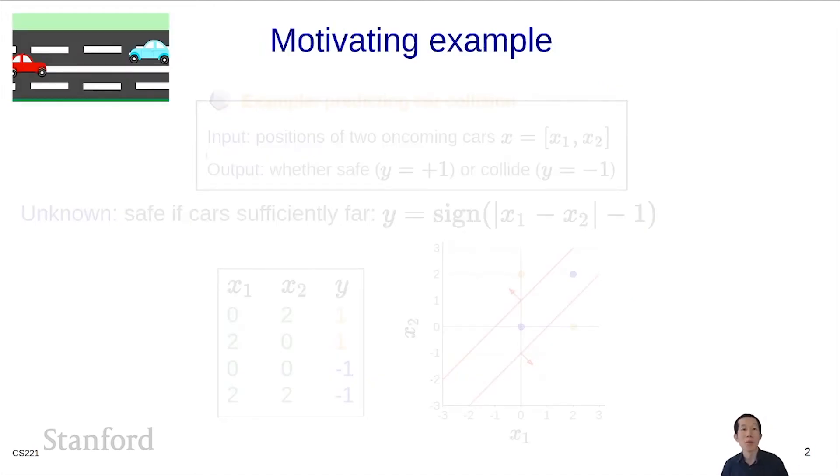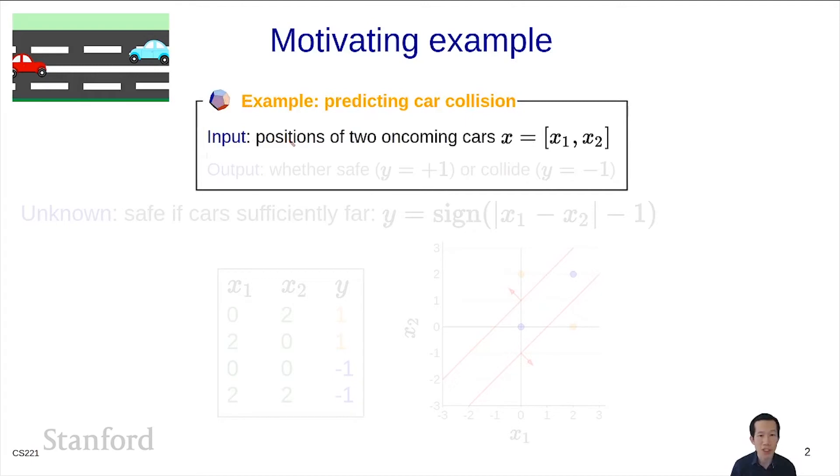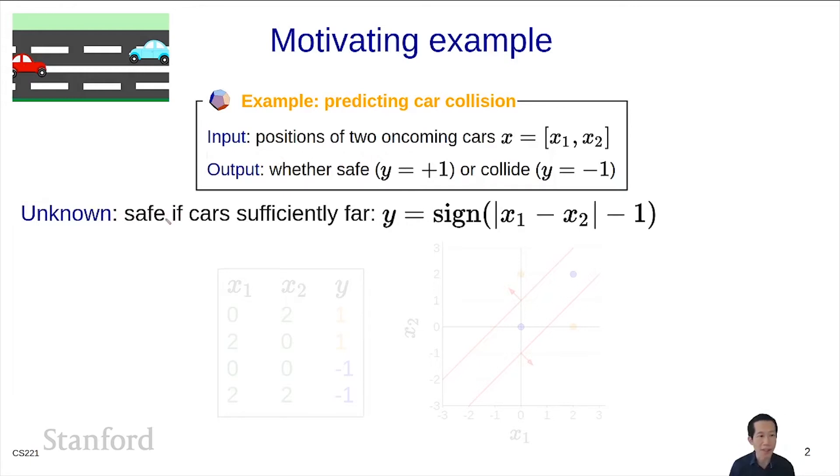Let me begin with a motivating example. Suppose you're trying to predict whether two cars are going to collide. The input is the positions of two cars, x₁ and x₂. You'd like to output whether y equals 1 if it's safe, or y equals minus 1 if there's a collision. We'll say cars are safe if the distance between them is at least 1.